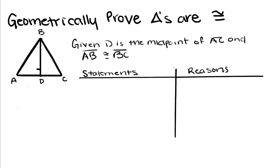Today we're going to talk about how we geometrically prove that triangles are congruent. The important thing to talk about first is what do we mean by geometrically prove? If I was to tell you to algebraically prove something, you wouldn't use equations to solve for the sides to prove that they are congruent. Instead, we're going to geometrically prove it, which means we're going to take the theorems and rules we've learned up until now as reasons why these triangles are congruent.